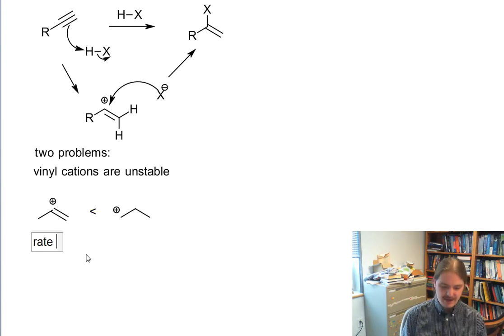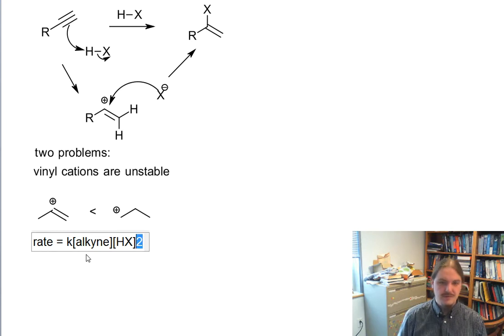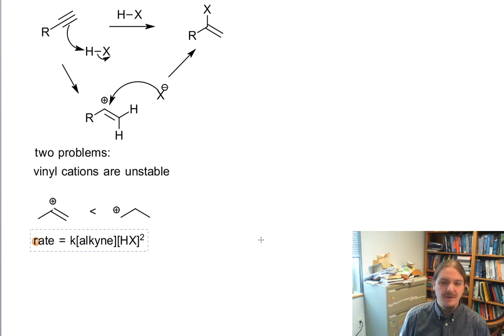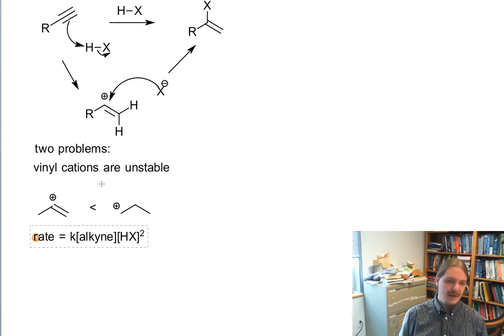The second problem that this mechanism has is it doesn't match the observed rate law. The rate of the reaction from kinetic studies is determined to be equal to the rate constant times the concentration of the alkyne times the concentration of HX squared. So that means that there are two molecules of HX involved in the mechanism.